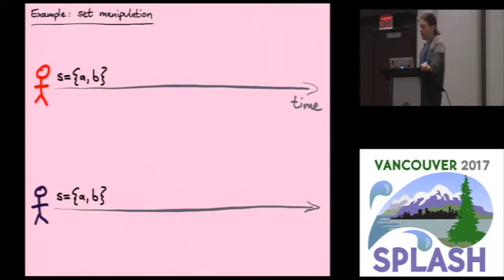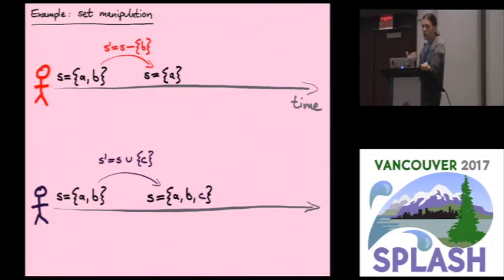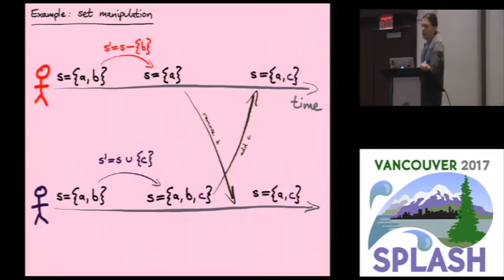Another might be a set. In a set, you can have concurrent modifications happening, say the red user removes the element b from the set s. And concurrently, the purple user adds the element c to the set s. And again, we can merge these two.